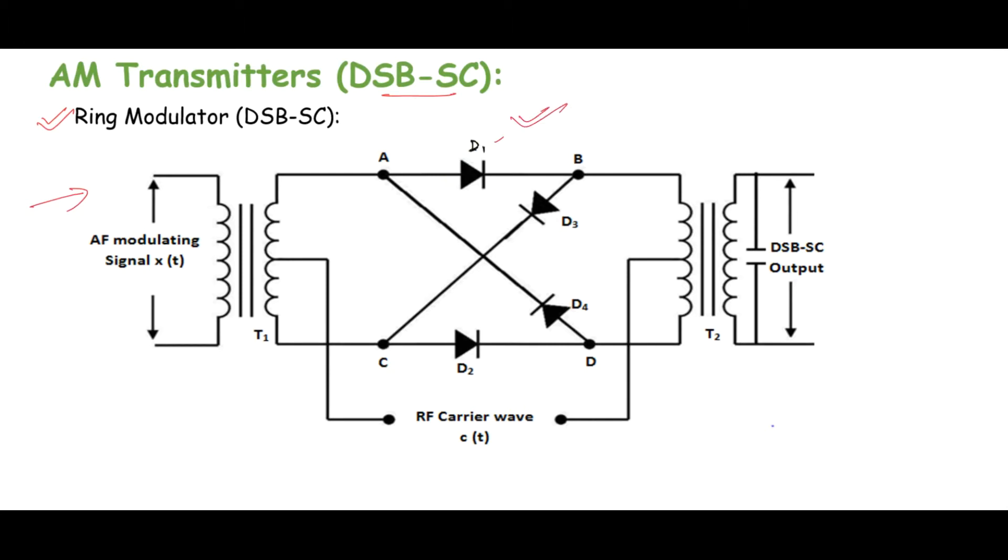In addition, on the input side we have T1 transformer with both input and output windings assumed to be the same. We can call it an audio frequency transformer. Likewise, we have T2 transformer at the output. Again, the windings are assumed to be the same, and this transformer is known as RF transformer.